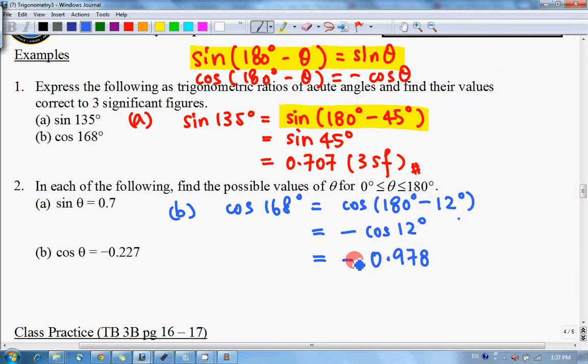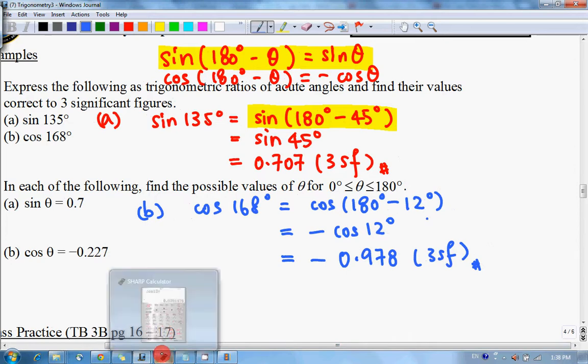0.978, add a negative sign, same thing, three significant figures. Actually, we can double check this.